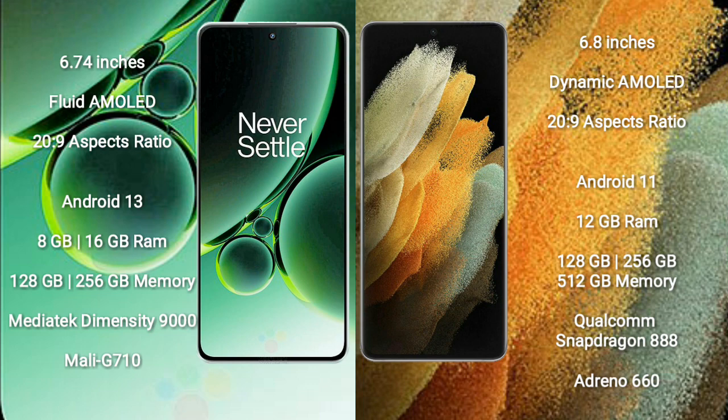OnePlus Nord 3 comes with 8GB or 16GB RAM and 128GB to 256GB internal storage, MediaTek Dimensity 9000 processor and GPU Mali-G710.